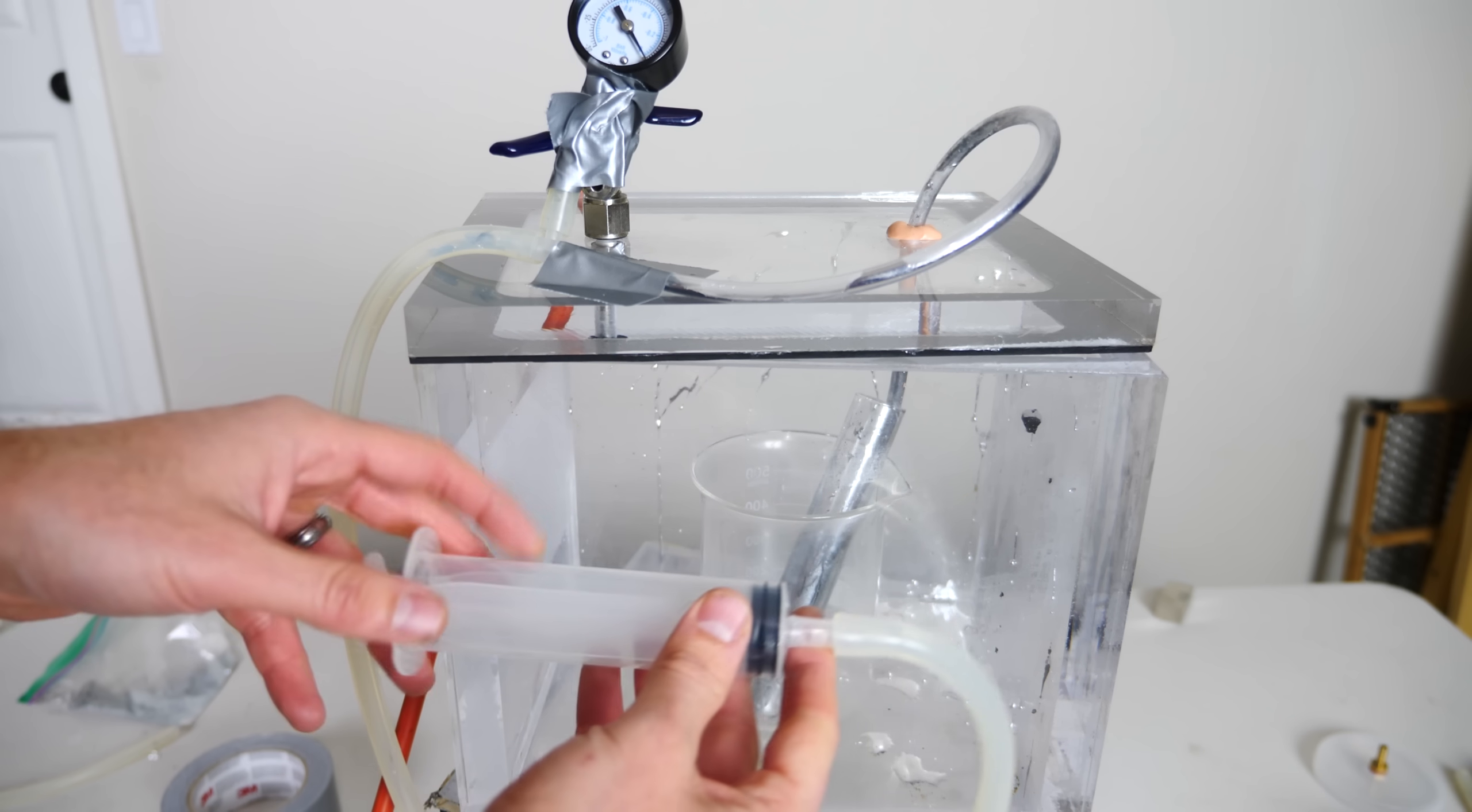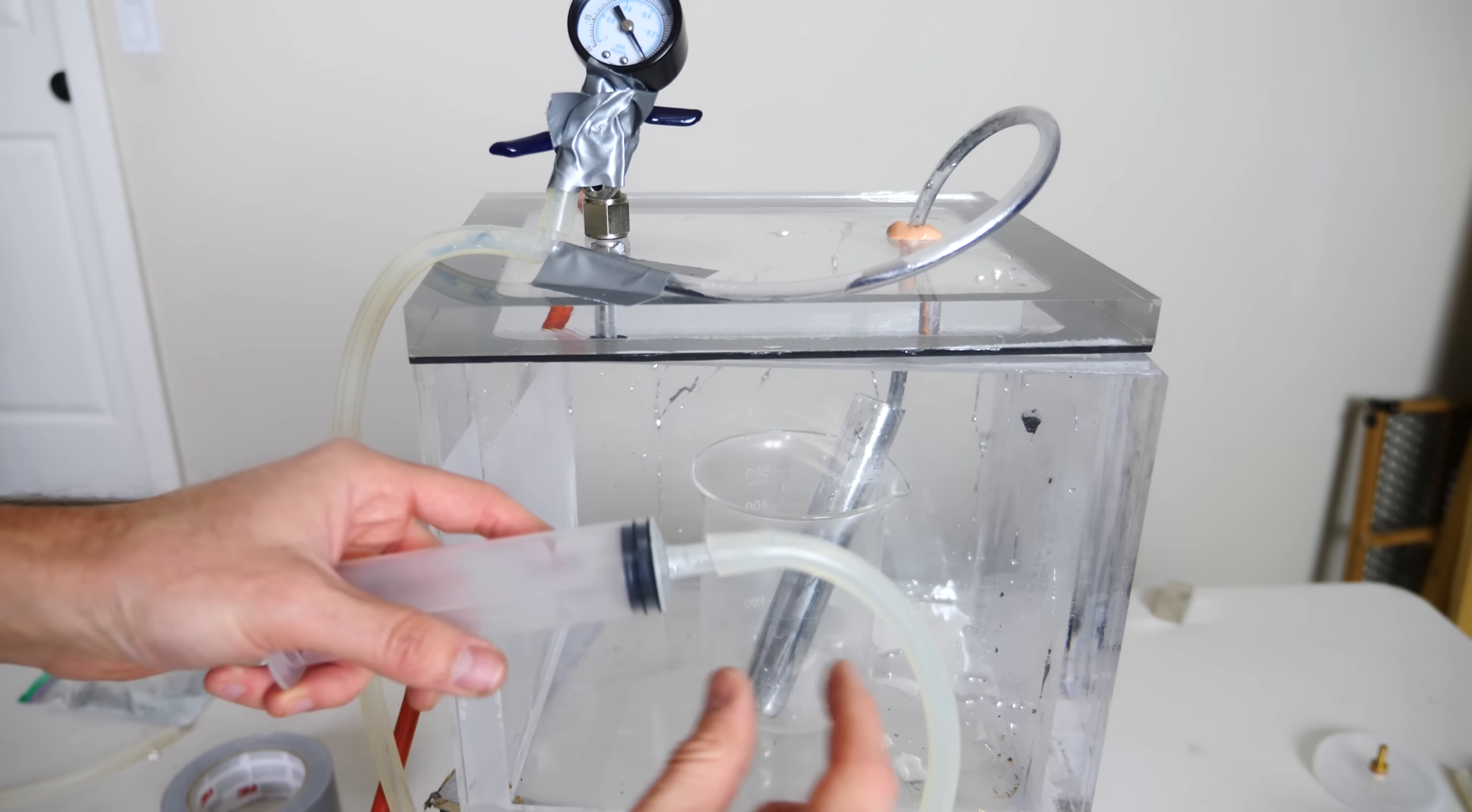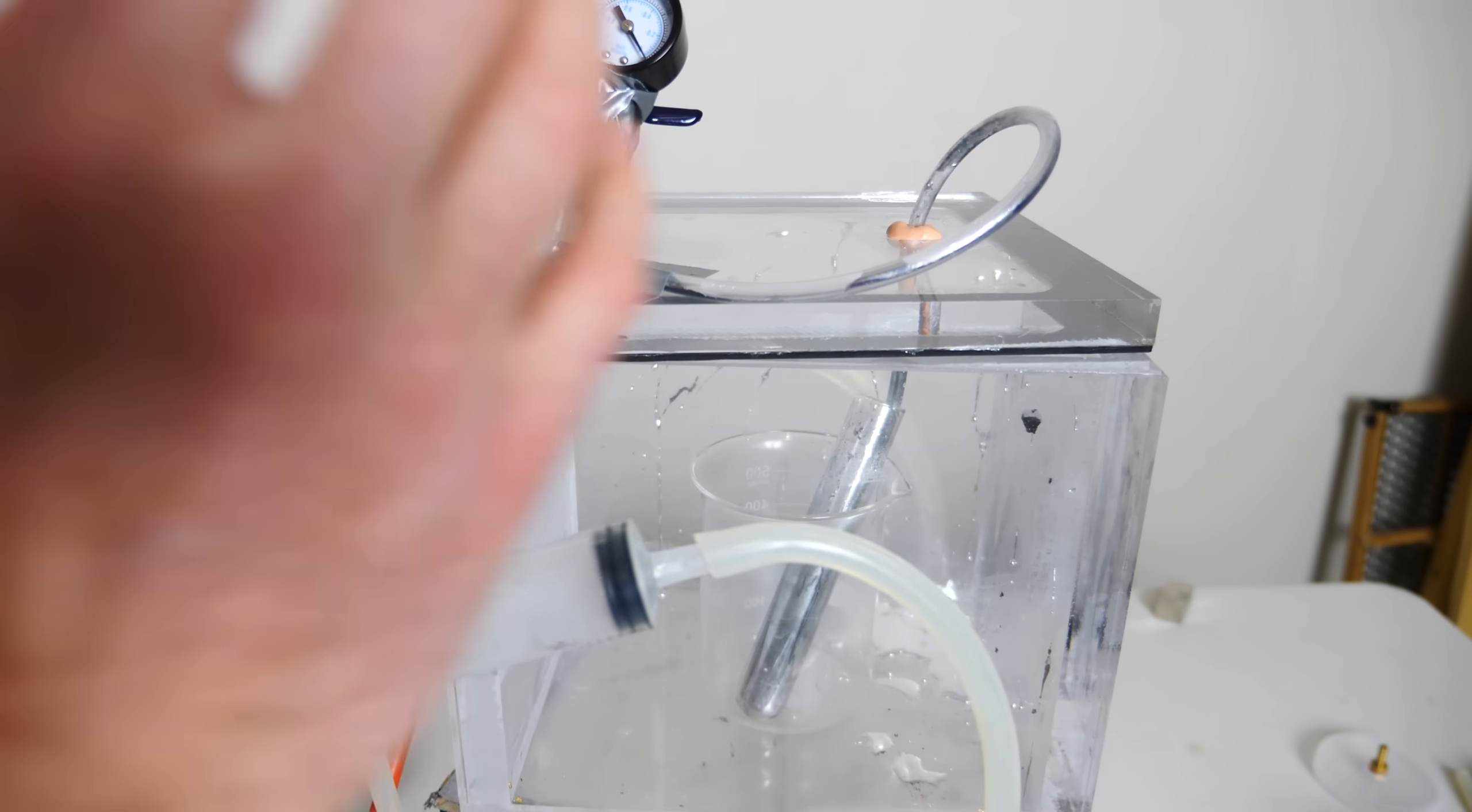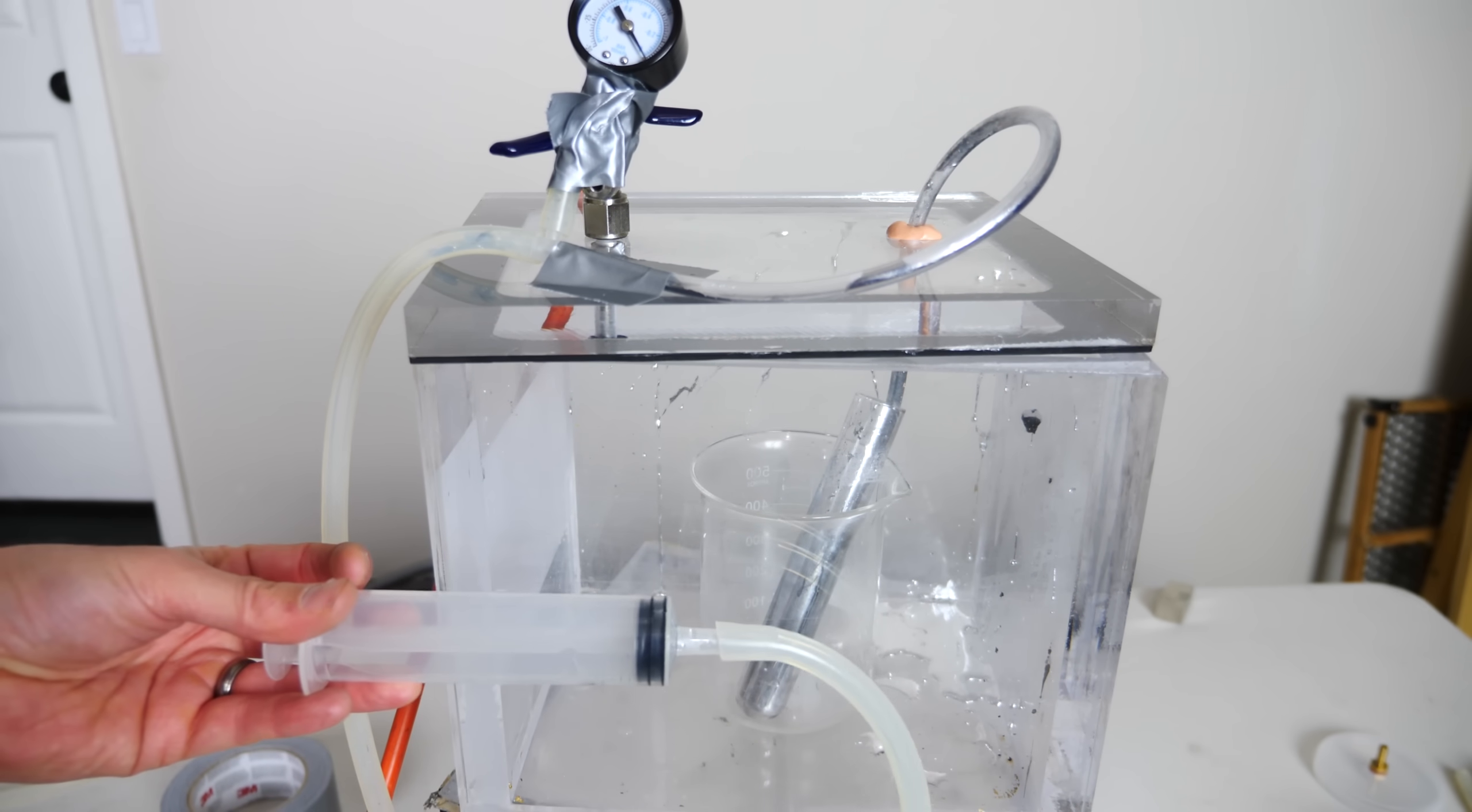So the lower the vacuum gets, the more volume you need to pull to actually suck any liquid up into the tube. At a full vacuum, even if you pull this all the way, you don't get any liquid moving up the tube. So no matter what you do, you can't suck something up into a syringe while it's under vacuum.